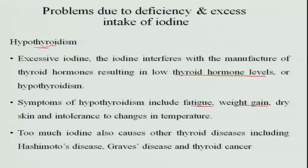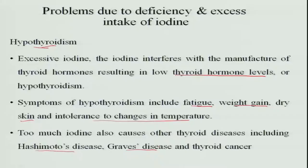There is also dry skin and intolerance to temperature changes. Too much iodine causes thyroid diseases including Hashimoto's disease, an autoimmune disease that attacks the thyroid gland, and Graves' disease, where the thyroid gland itself has an autoimmune action against itself. Excess iodine can also cause thyroid cancer.